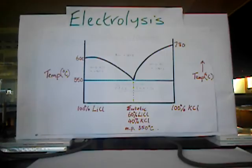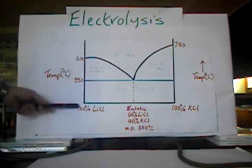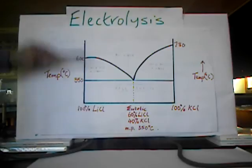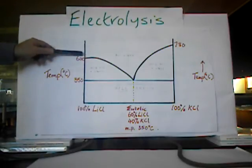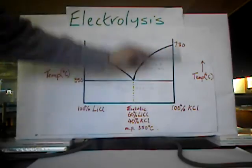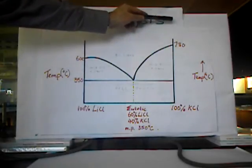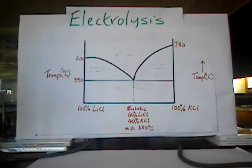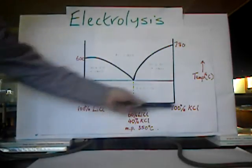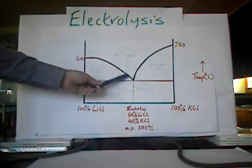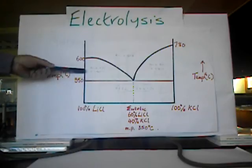This is called a phase diagram. Temperature is on the vertical axis on both sides. If you melt pure lithium chloride and let it cool, it will solidify at around 600 degrees centigrade. If you take pure molten potassium chloride and let it cool, it begins to freeze at 780 degrees C. If you take a mixture of these two ionic compounds — for example a 50-50 mixture — you can read off the melting point of that mixture from the y-axis.